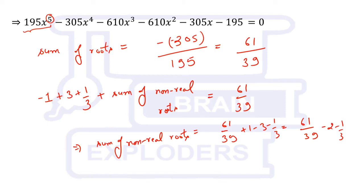This is equal to, we can take 39 as LCM, 61 minus 78 minus 13, which is 61 minus 91 over 39, and this will finally give us minus 30 over 39, and our answer is minus 10 over 13.